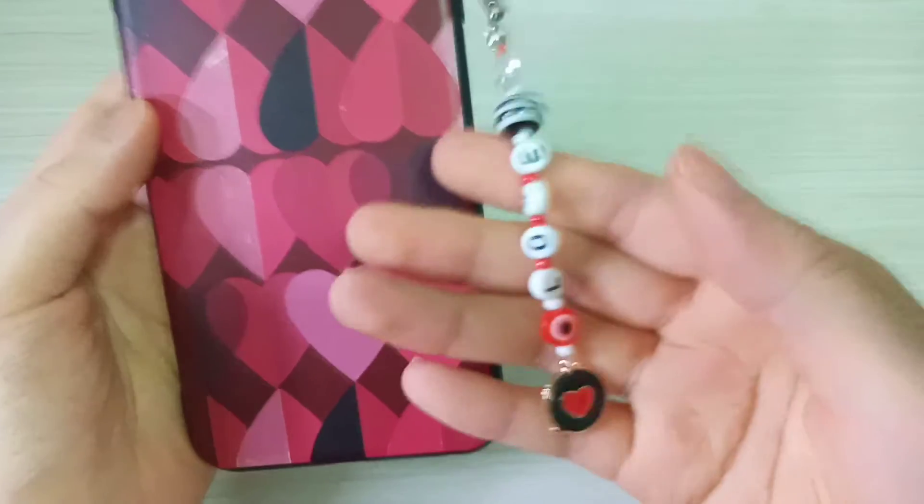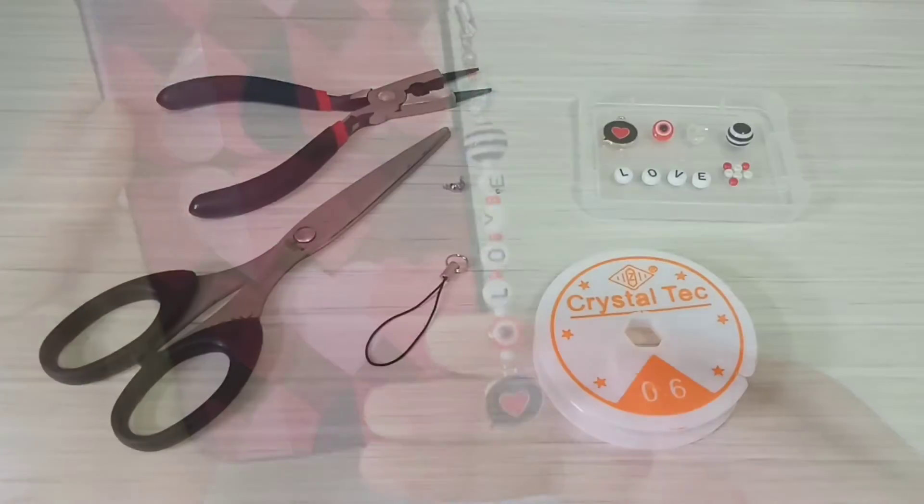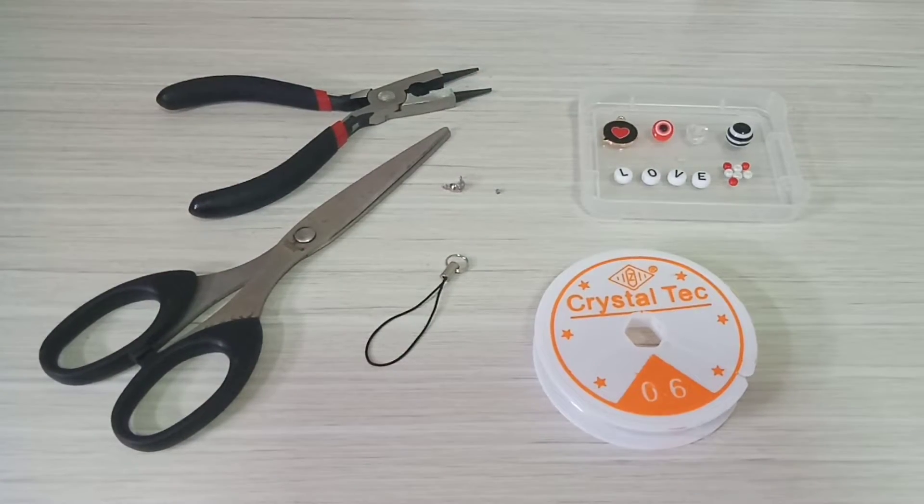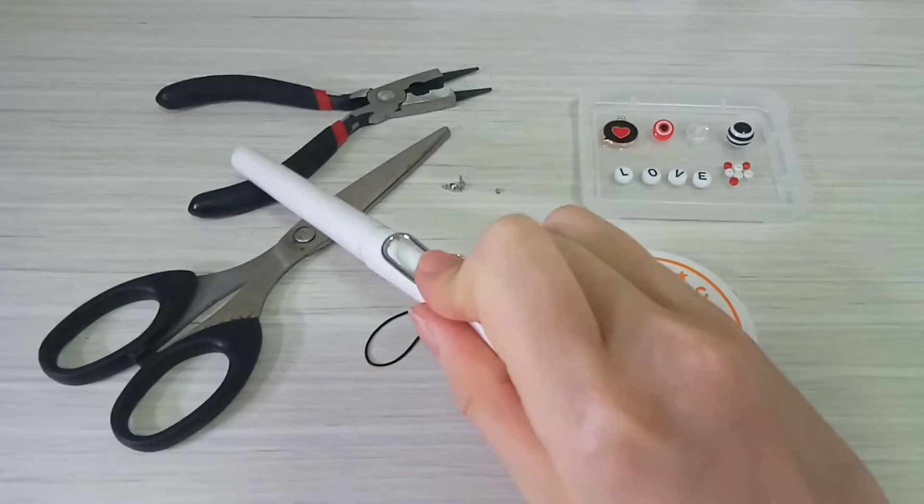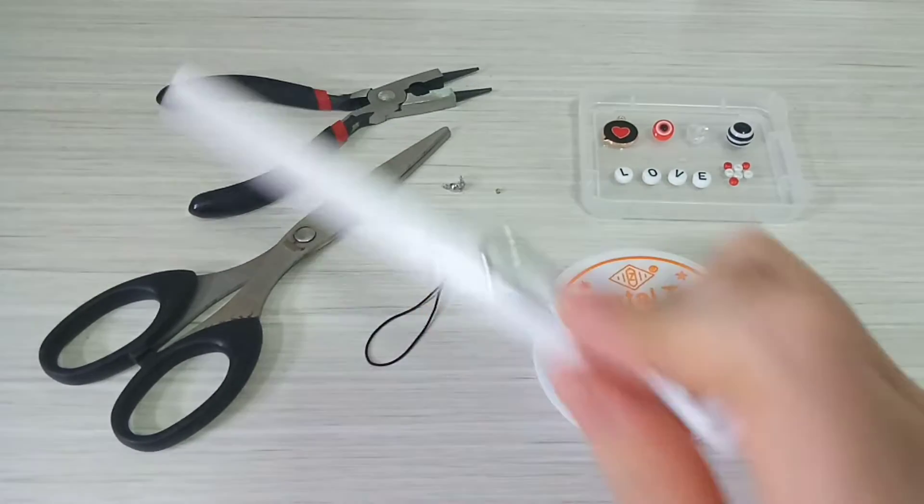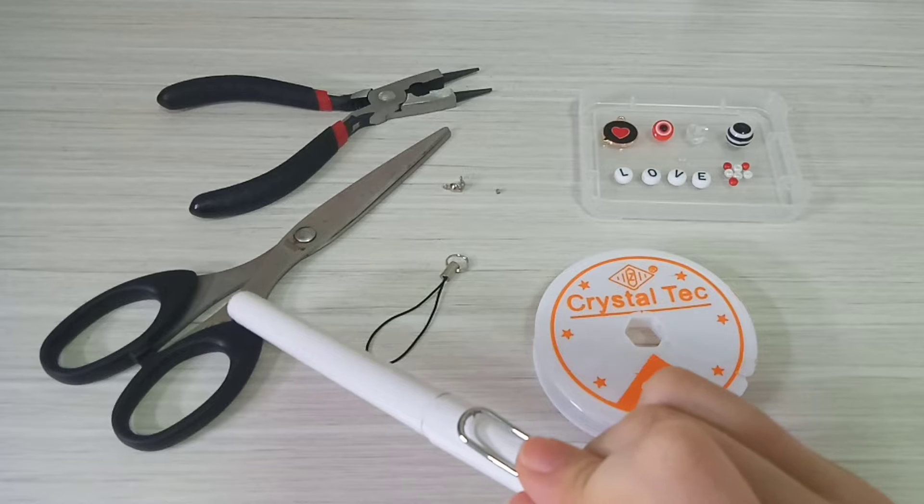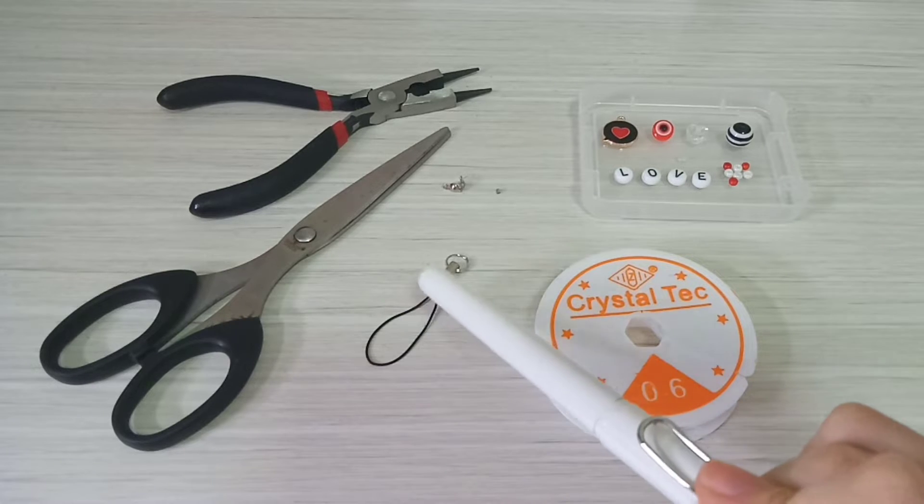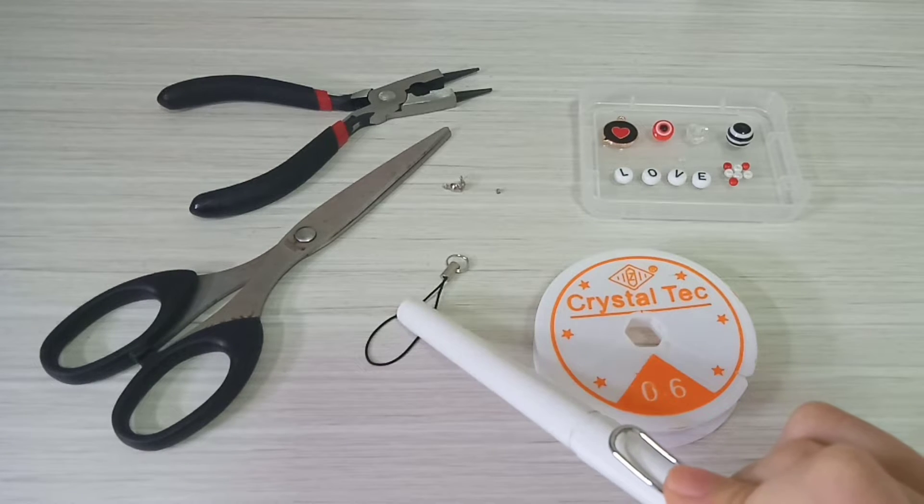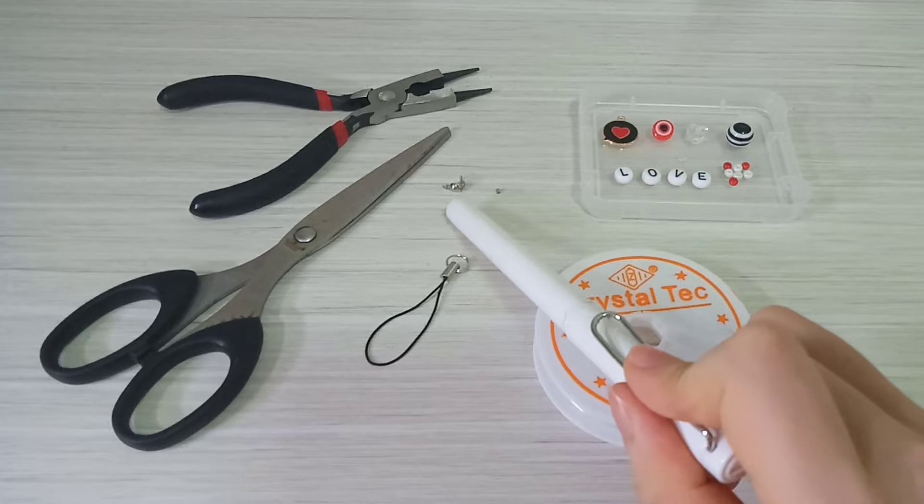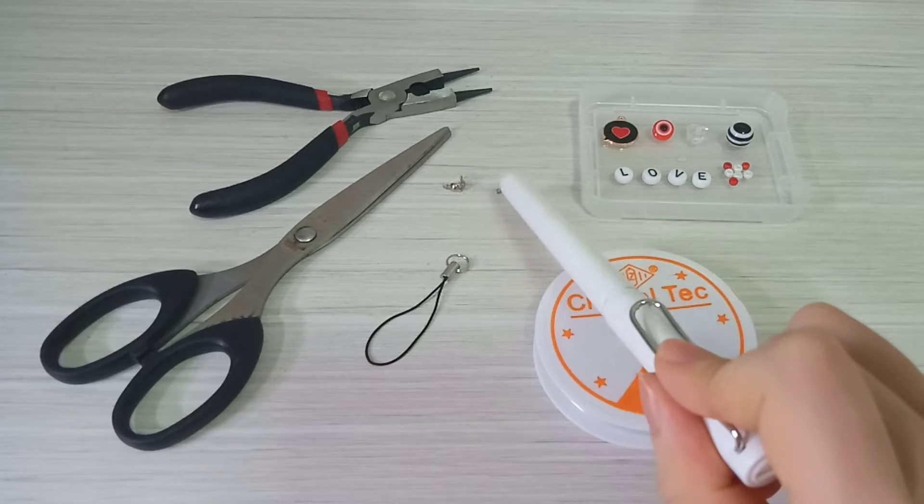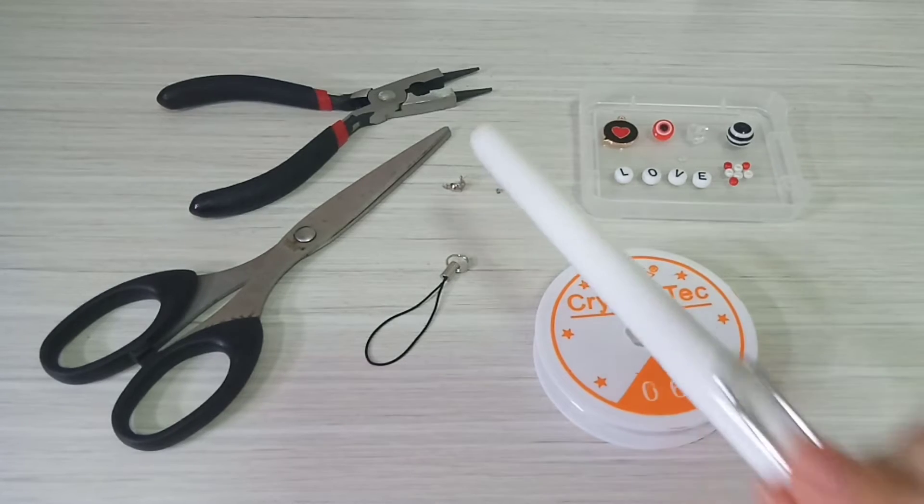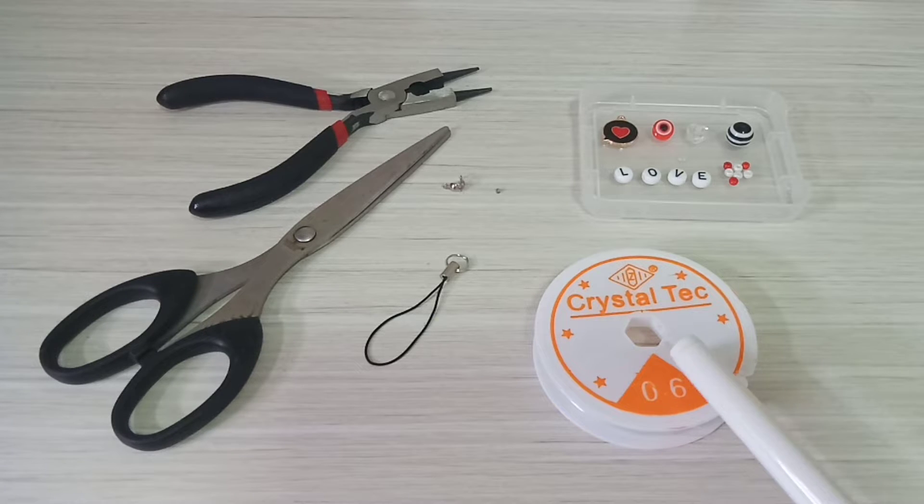Well, let's just jump into the tutorial. So to start off, you are going to need a plier, a pair of scissors, a strap. I also have a small lobster claw and a tiny tube called stopper.